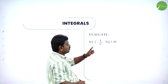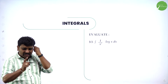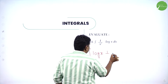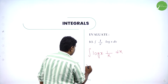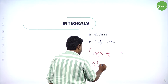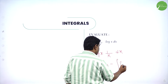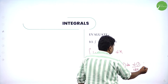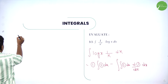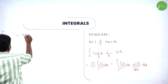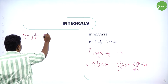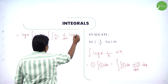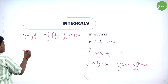Now: integration of (1/x²)·log(x) dx. According to ILATE, logarithm comes first, algebra next. I write this as integration of log(x)·(1/x²) dx. Apply parts formula: first into integration of second minus integration of integration of second into derivative of first. So: log(x) into integration of 1/x² minus integration of 1/x² into derivative of log(x) dx.